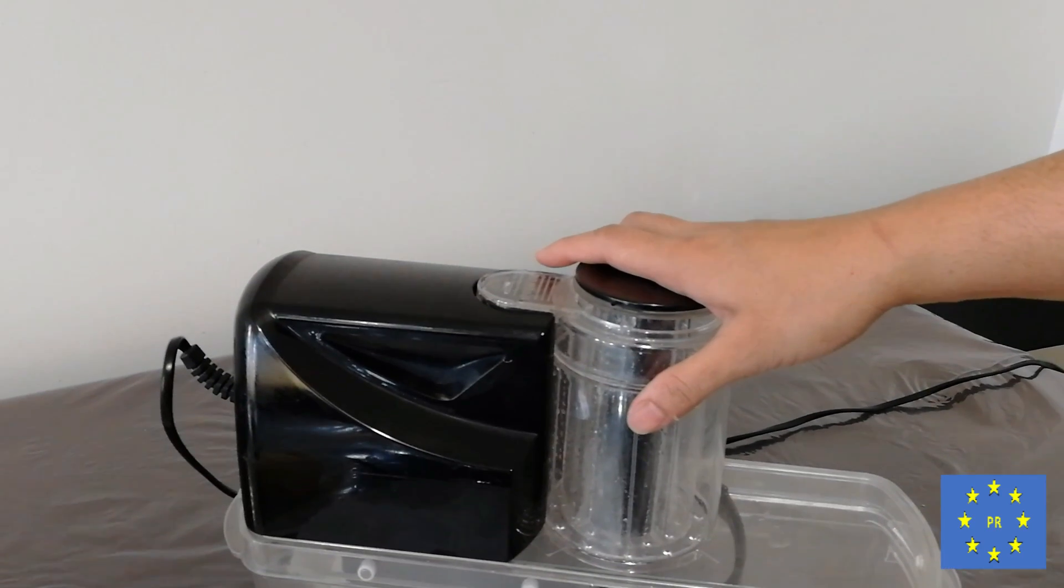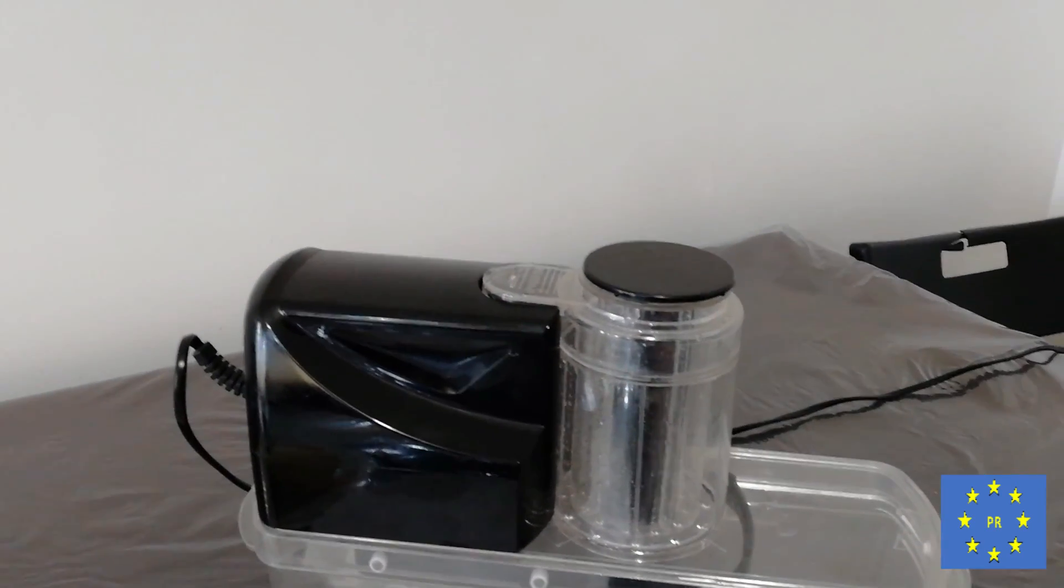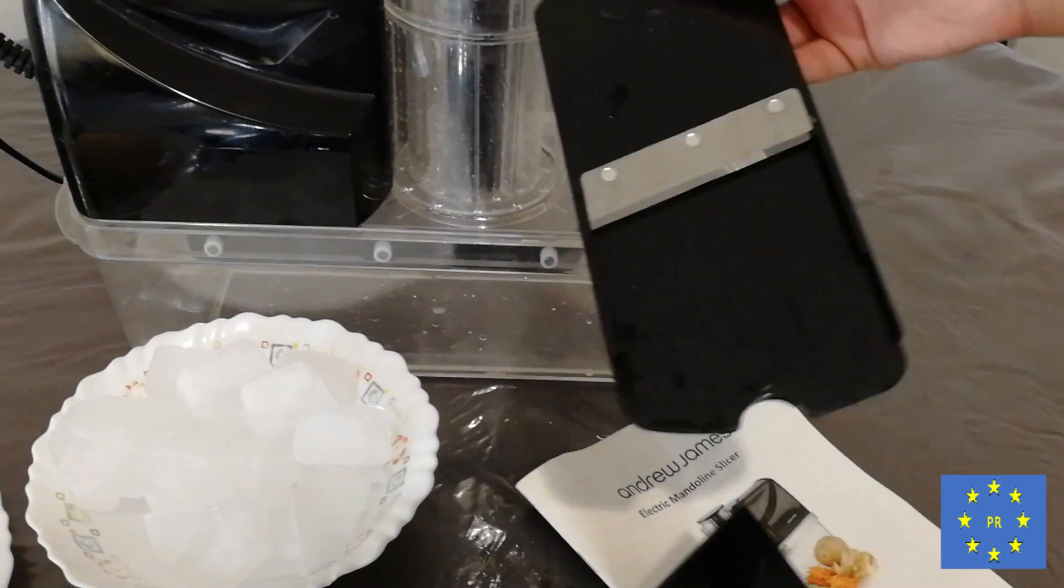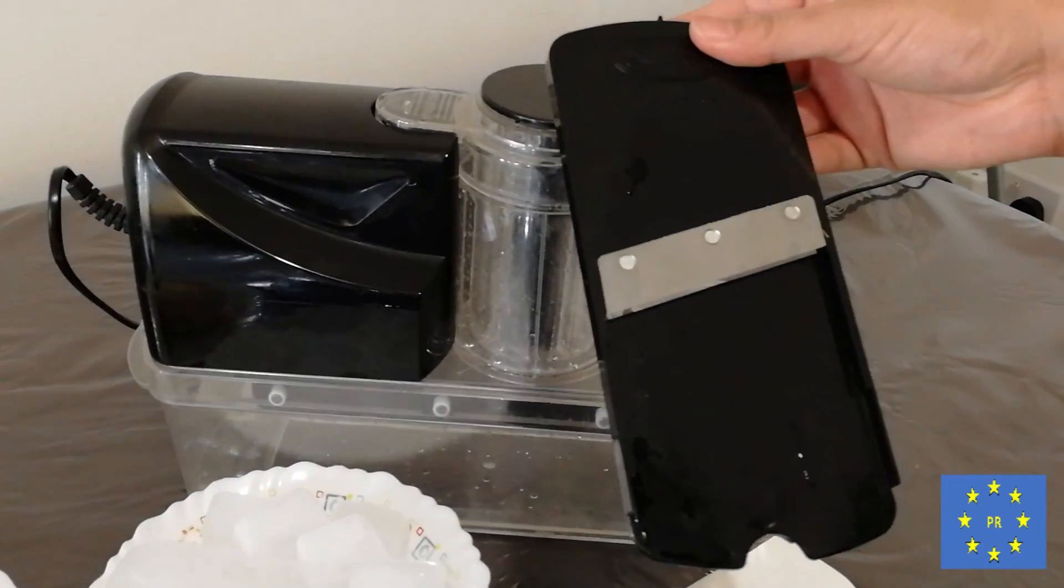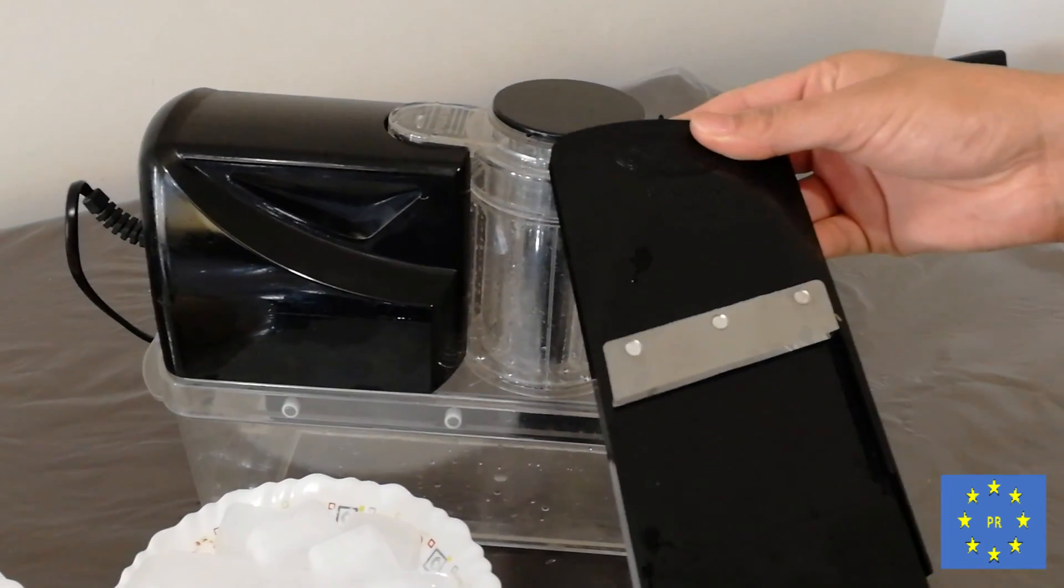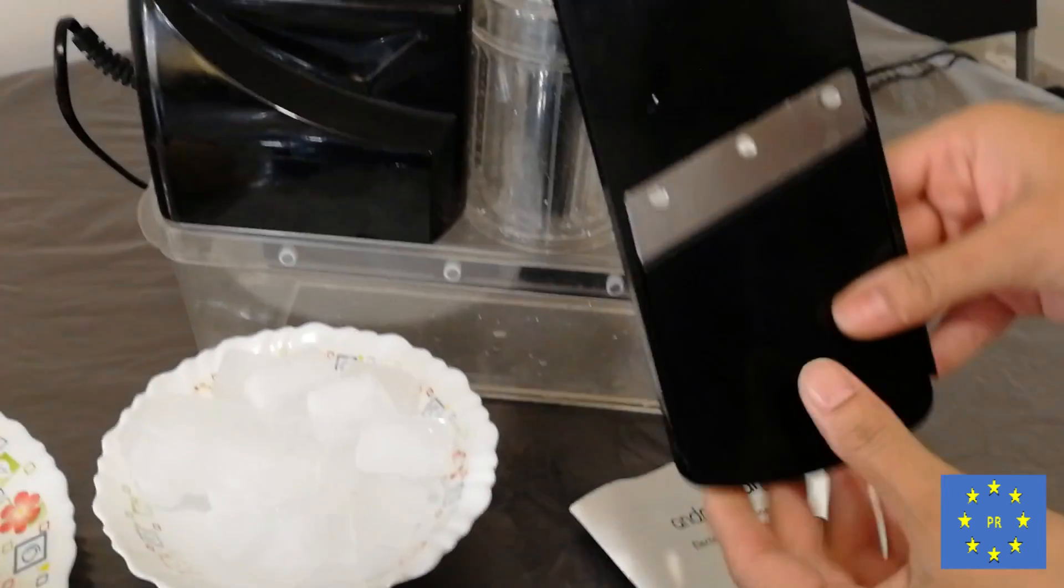And in terms of slicing, you have got two slicer options. If you want a thick slice, you can use this plate. If you want a thinner slice, you can insert this and use it as a second option.